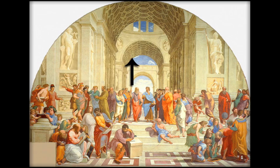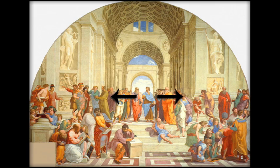Plato's gesture is vertical, upwards along the picture plane into the beautiful vault above. This upward motion represents his theory of forms and an emphasis on the universals. Aristotle, on the horizontal plane at right angles, is initiating a powerful flow of space towards the viewers. He motions, indicating his strong empiricist views and an emphasis on the particular.